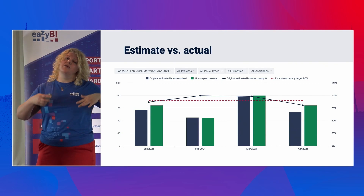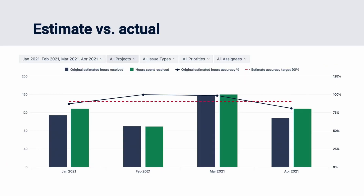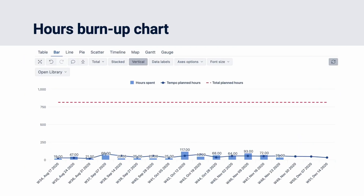When it comes to Tempo, we also try to create metrics that allow you to build the most popular Tempo reports, like estimates versus actual. You can extend it by adding calculations — in this case, there's an added calculation about estimate accuracy: how well we estimate our work and how it goes with actual data.